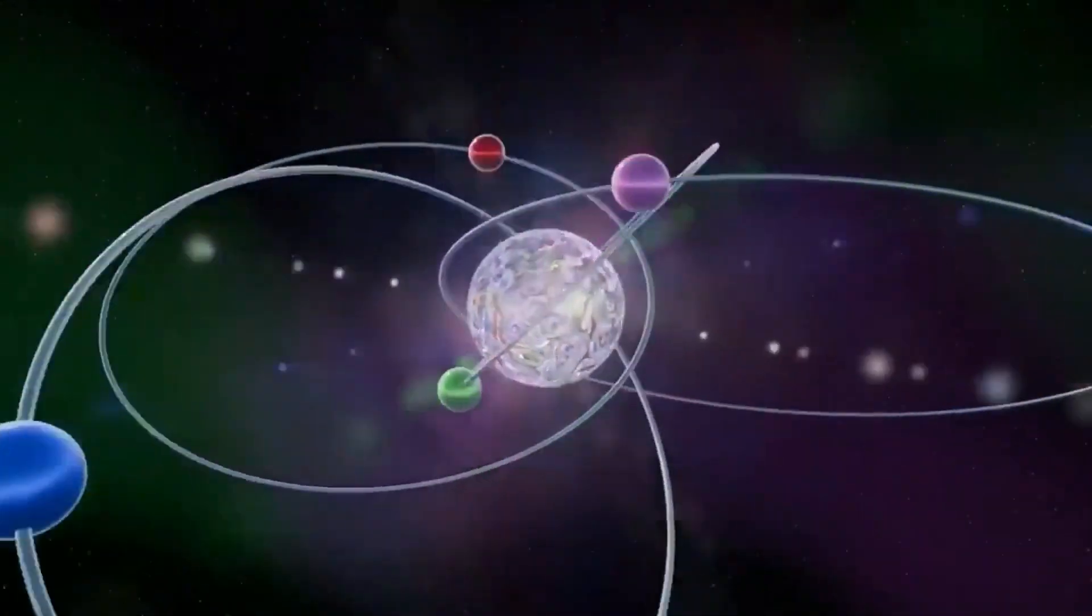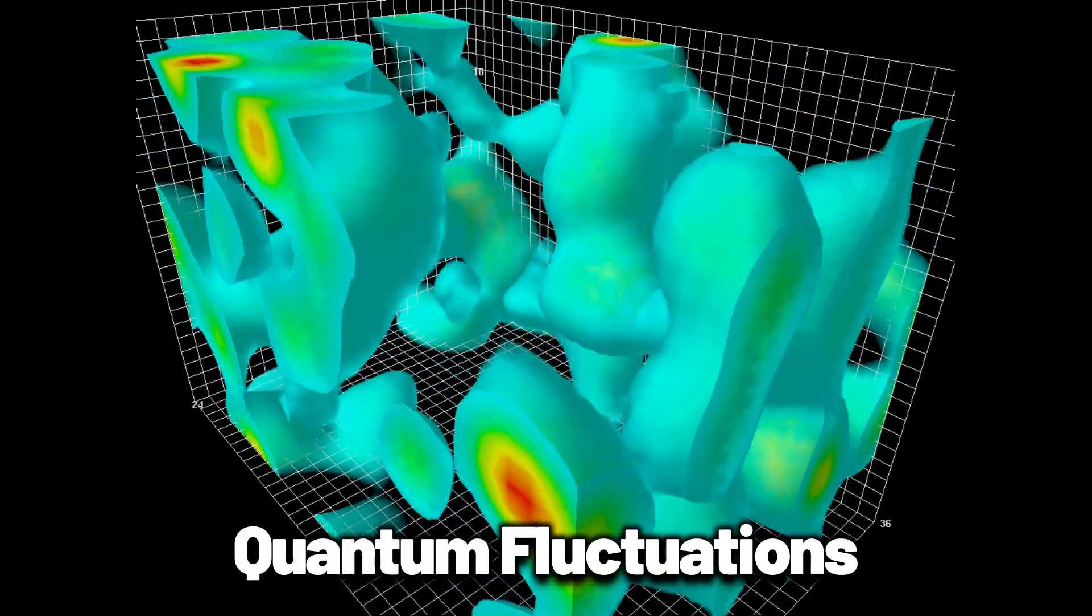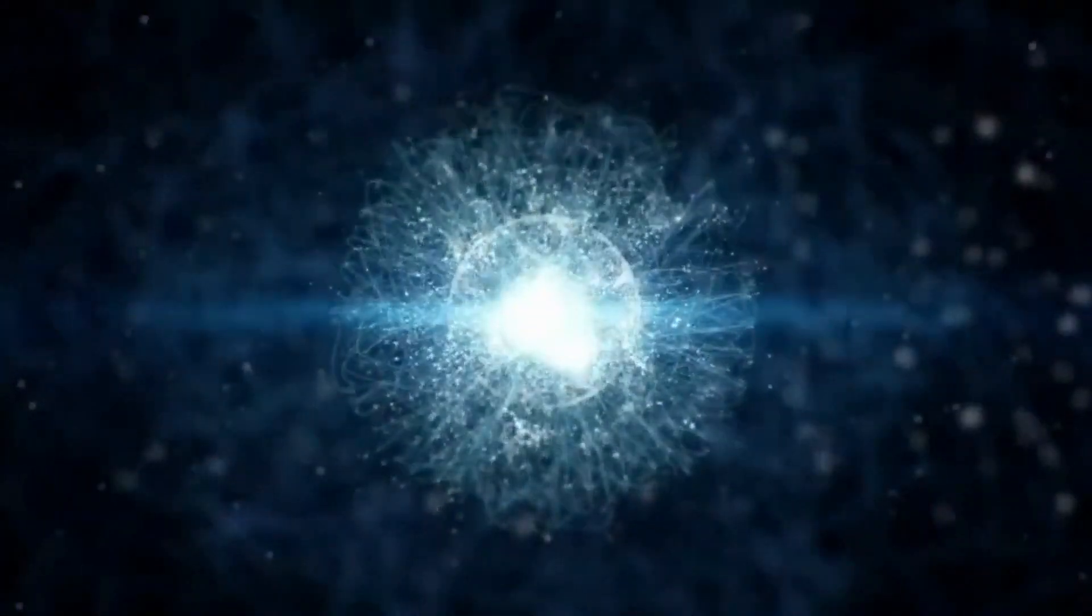This is not science fiction. Researchers observed quantum fluctuations behaving as though they were moving faster than light, an occurrence that defies mainstream physics.